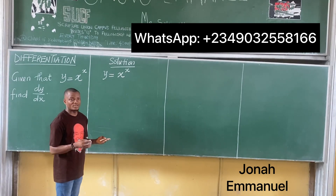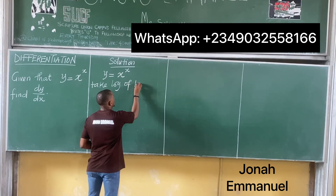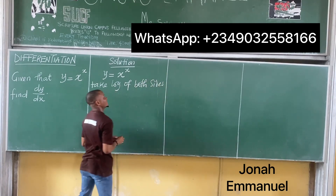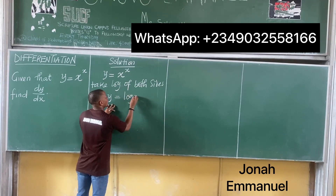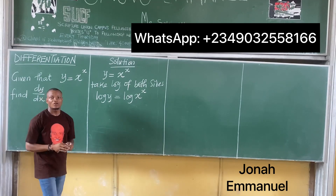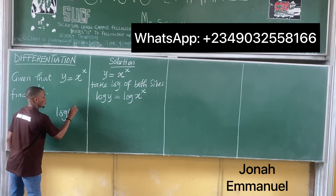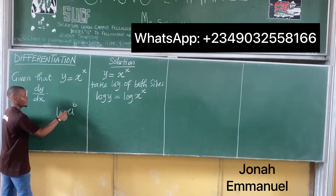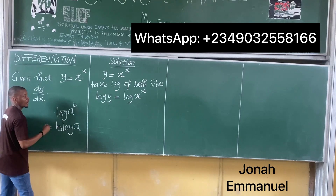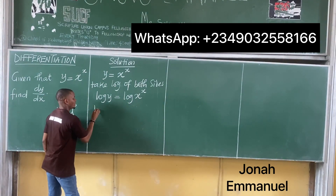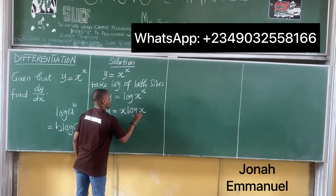My first step is that I will take the log of both sides. So taking log of both sides, I have that log y is equal to log of x to the power x. From the laws of logarithms, if I have log a to the power b, the power comes down: it equals b log a. Using this idea, log y becomes x log x.